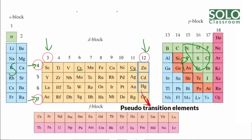There are three exceptions in D Block elements. They are zinc, cadmium, and mercury. These are called pseudo-transition elements — meaning fake transition elements.